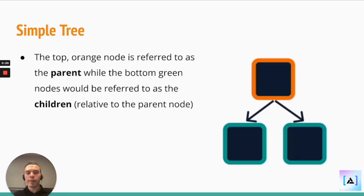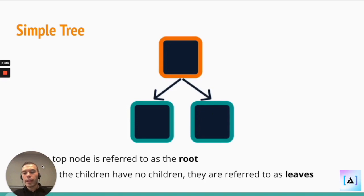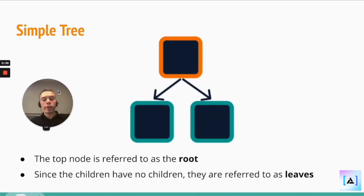So here we have a simple tree. The top orange node is referred to as the parent, while the bottom green nodes are referred to as the children relative to that orange parent node. In this simple tree, the top node is also referred to as the root. It's the initiation of the tree. And since the children have no children, they are referred to as leaves. They're at the end of the tree.